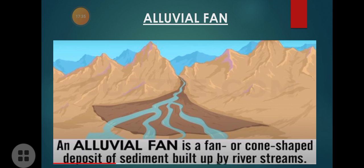An alluvial fan is a fan or cone-shaped deposit of sediment built up by river streams. When the river water branches out into small distributaries, it forms a cone-shaped or fan-shaped deposit of sand sediment. This is called an alluvial fan — look at the dark colored shaded area in the picture. It is formed because of the river water distributing into several branches.